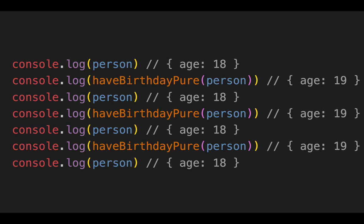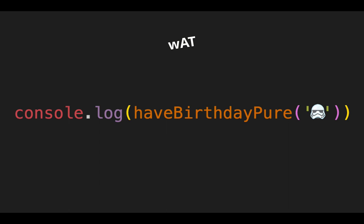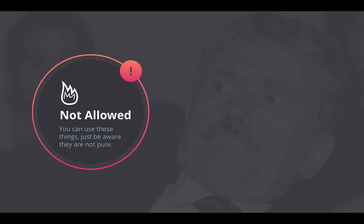Now that you know what pure functions are — same input, same output, no side effects — let's talk about things that are no longer allowed, at least in JavaScript, because they're not pure. When I say not allowed, I mean they're not pure and you should try to avoid them if you want to be pure. You can still use them; you may have to work around them. You can always wrap state — our whole job is to wrap state as programmers anyway.